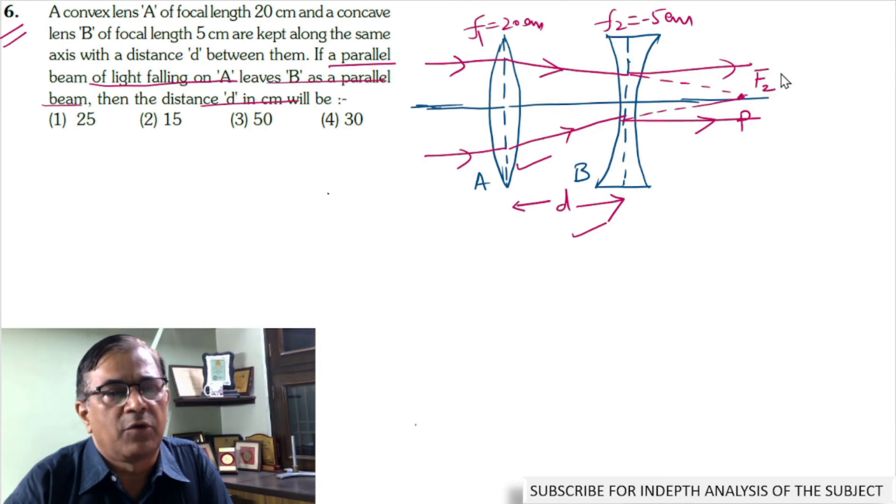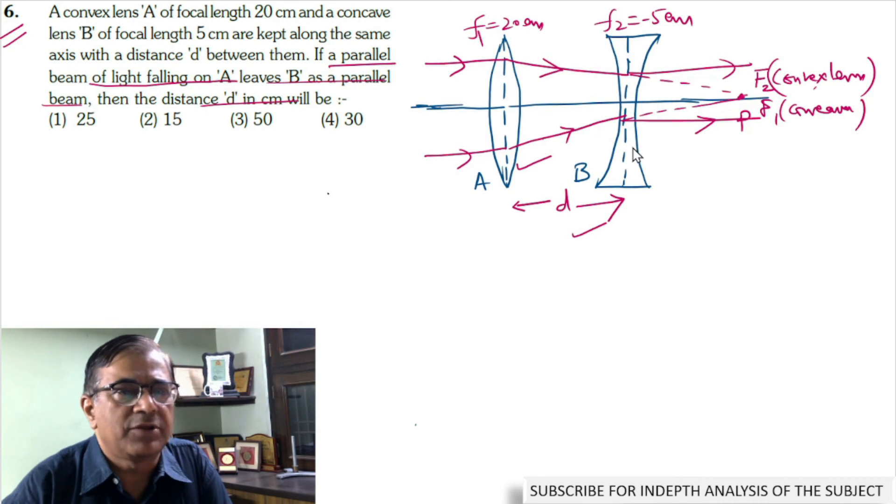The second focus for the convex lens and the first focus for the concave lens, they happen to be the same. Now as per definition, this distance got to be 20 cm and this separation is 5 cm.